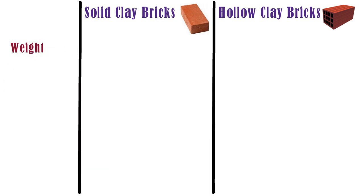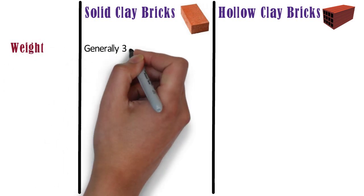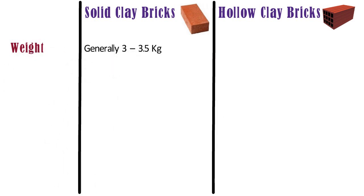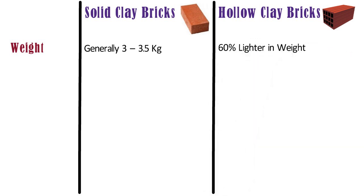Weight. The weight of a clay brick is generally 3 to 3.5 kg. The weight depends on density and size of the brick. Whereas, hollow clay bricks are 60% lighter in weight than normal bricks.